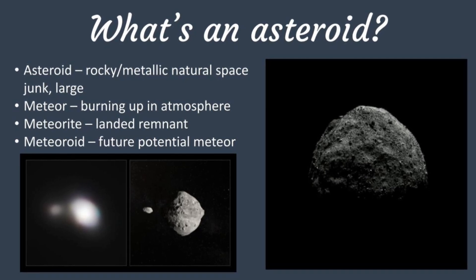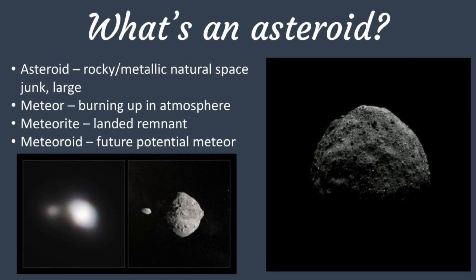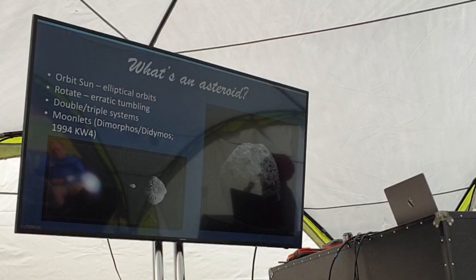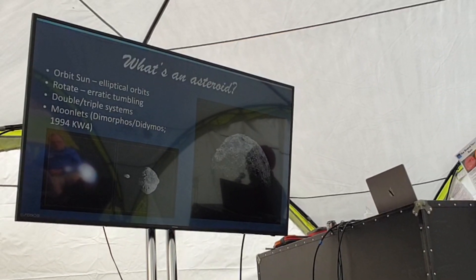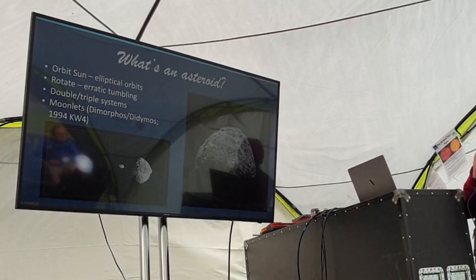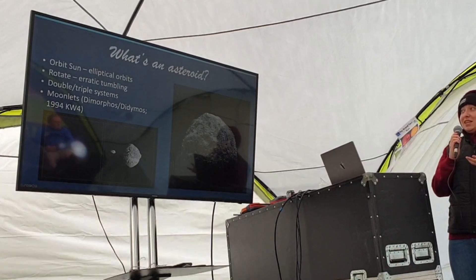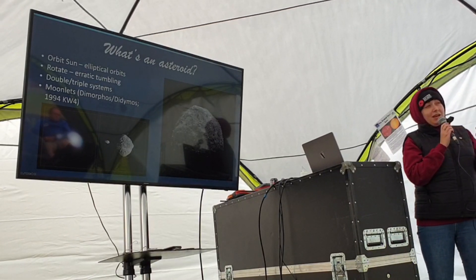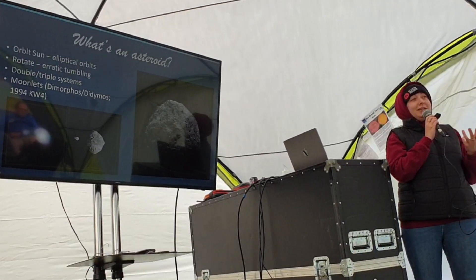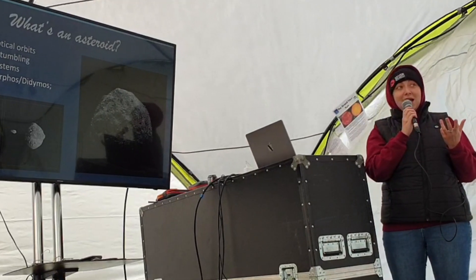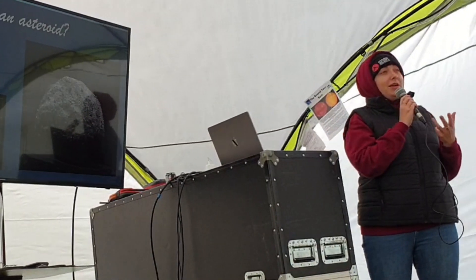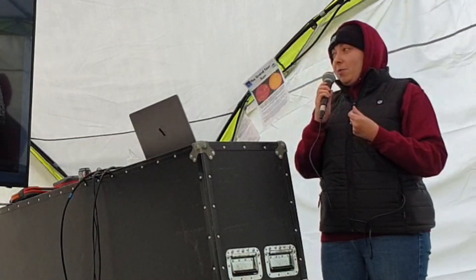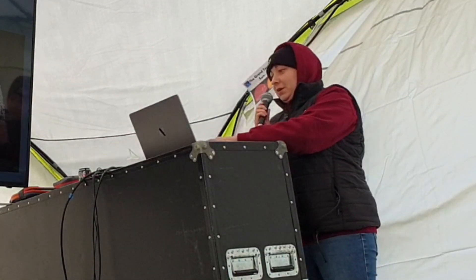They do orbit the sun in one way or another, typically on elliptical orbits — quite kamikaze orbits, because they're heavily influenced by the larger bodies in the solar system. Like everything in the solar system as well, they do rotate in some sort of sense, but rather than a nice uniform rotation like planet Earth has, it's more like erratic tumbling, so they're not necessarily uniformly spinning or looking pretty about it while they're doing it.